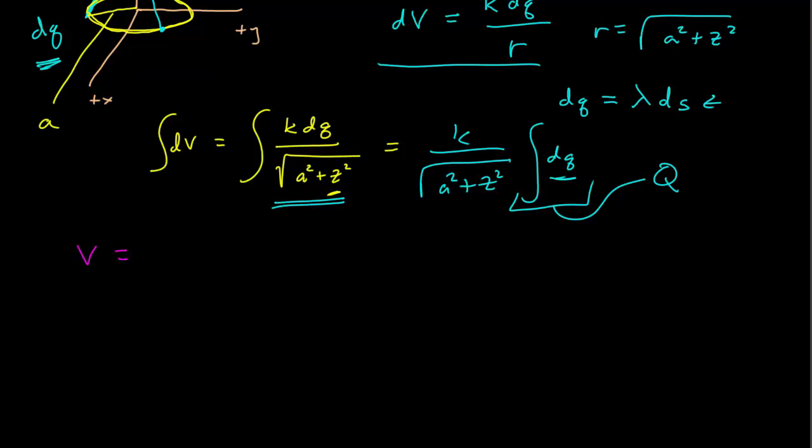And so our final potential V is equal to K times the total charge over the square root of the radius squared of the ring plus the height squared above the center, that combination.